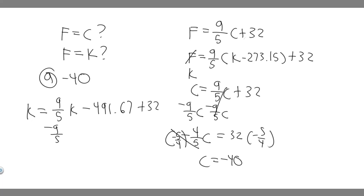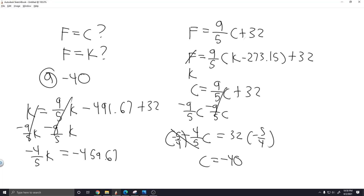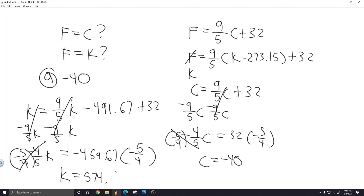Subtracting 9/5 · K from both sides gives minus 4/5 · K on the left, and the K terms on the right go away. So: minus 4/5 · K = minus 491.67 + 32, which equals minus 459.67. Now we multiply both sides by minus 5/4 — the minus signs cancel — giving K = 459.67 × 5 ÷ 4 = 574.5875.